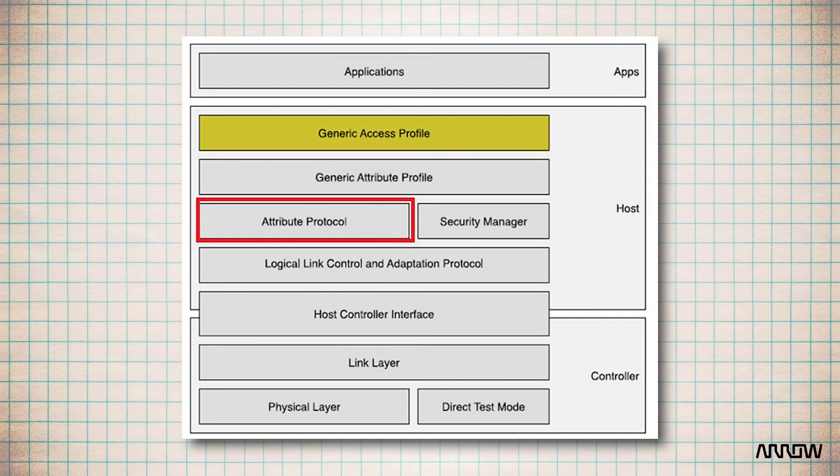Finally, there's the Generic Access Protocol or GAP. And this makes the device visible to the outside world and determines the role of the device in the network.